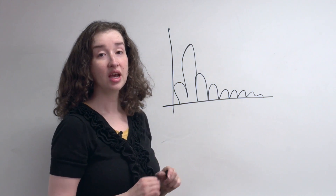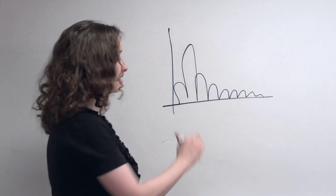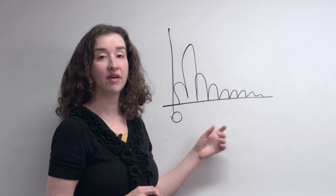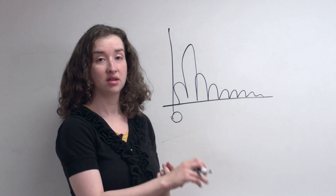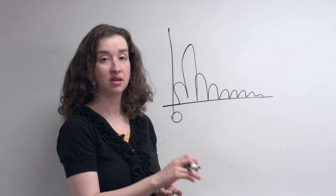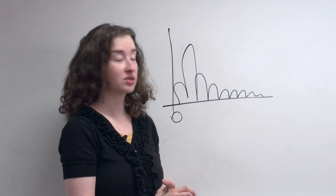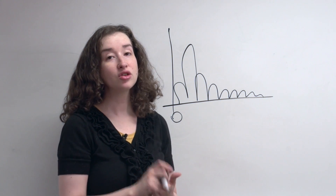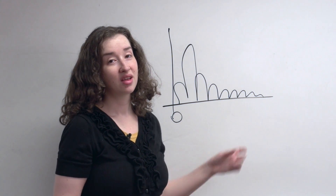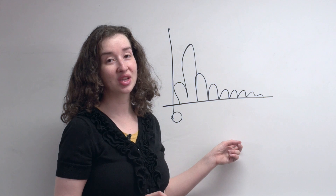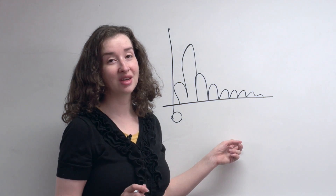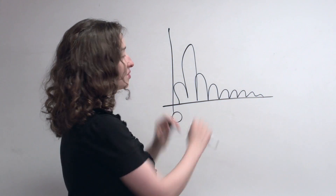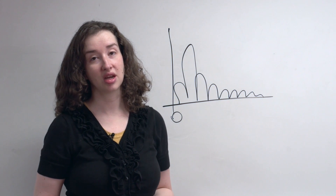A right-skewed distribution is going to occur any time you have a variable that has to be positive. Times, distances, and money are the most common. Any time you know you have a variable that's time, distance, or money, you should assume — until you look — that it's going to be right-skewed, and that you're going to have to deal with this non-normality in some way.